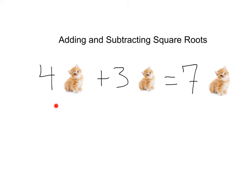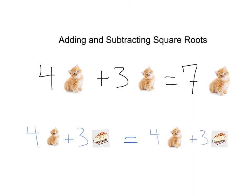For example, if I have four kittens plus three kittens, that's going to leave me with seven kittens total. Now in this different scenario, I've got four kittens plus three cheesecakes. In no scenario would I ever want to combine a kitten with a cheesecake — that would just be ridiculous. So if I add four kittens plus three cheesecakes, I just end up with four kittens plus three cheesecakes. If they are not identical, you cannot combine them.